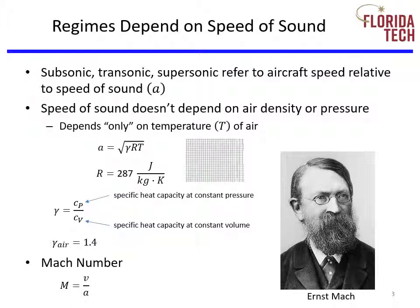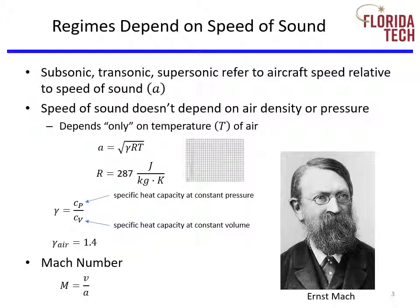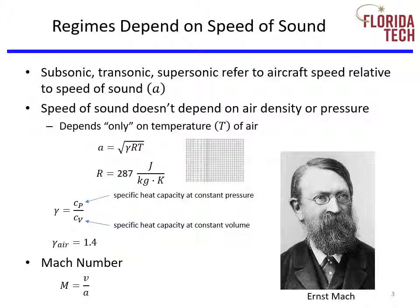The formula for speed of sound is the square root of gamma (the ratio of specific heats), the gas constant R in joules per kilogram times Kelvin, and the temperature in Kelvin. If you're using Rankine, you would need to convert the gas constant R to equivalent units. Gamma is about 1.4 for air. Once you know the speed of sound at your flight condition — again, you just need temperature — you can calculate the Mach number, which is your airspeed divided by the speed of sound. Just make sure the units match; don't use knots over meters per second. Both gamma and Mach number are dimensionless parameters.